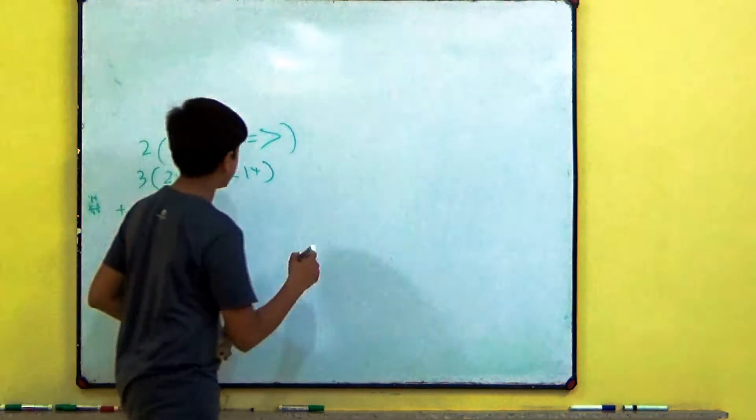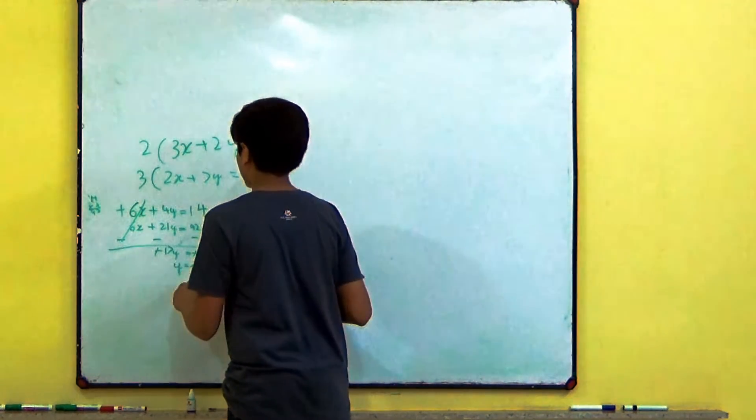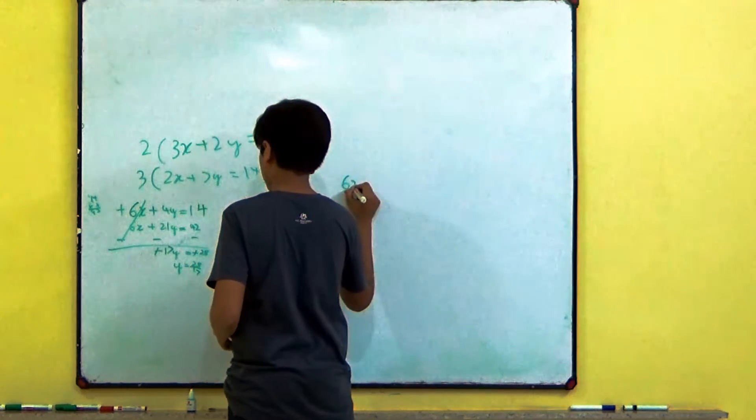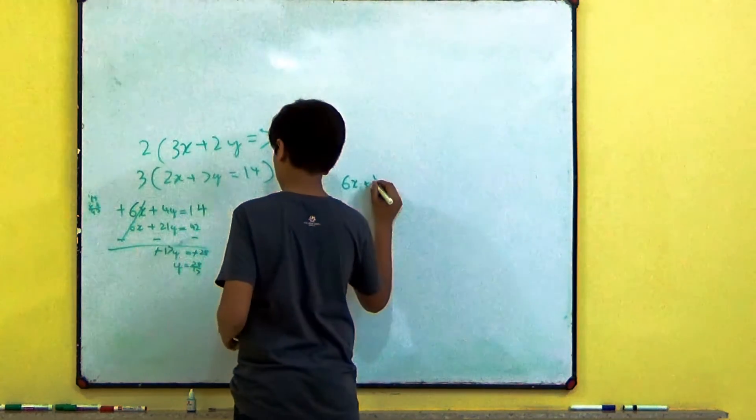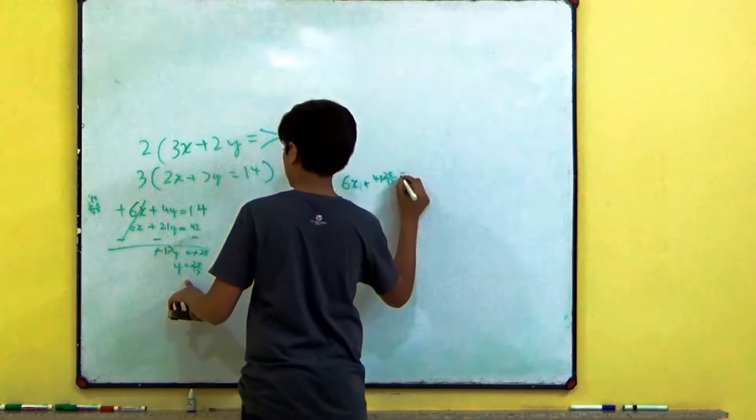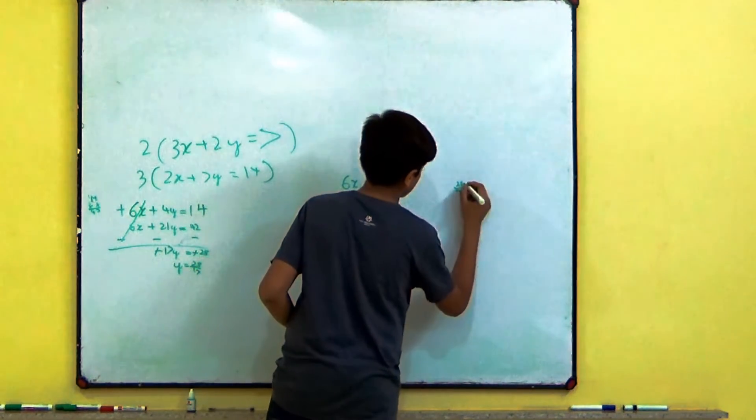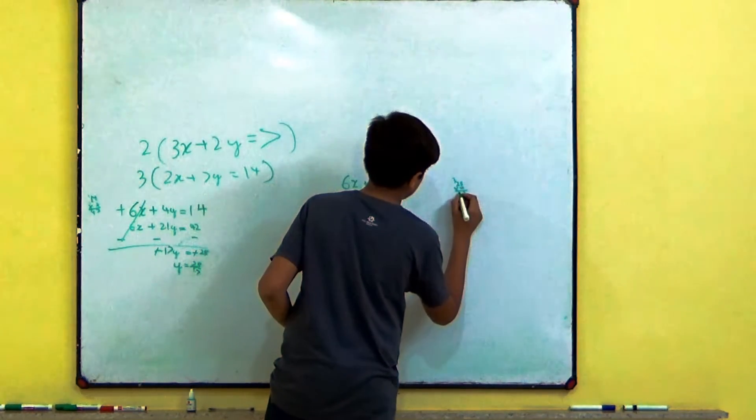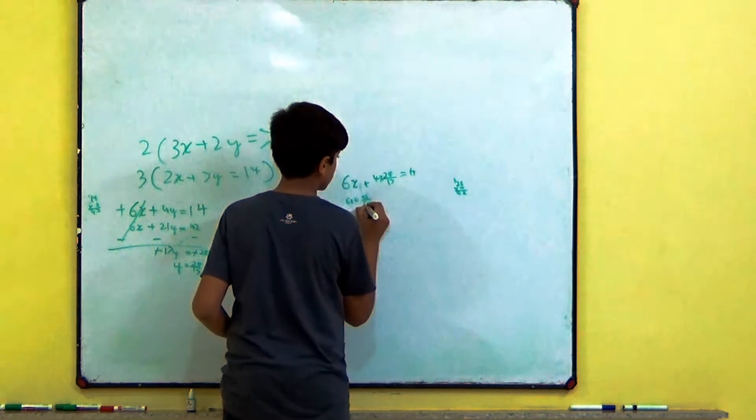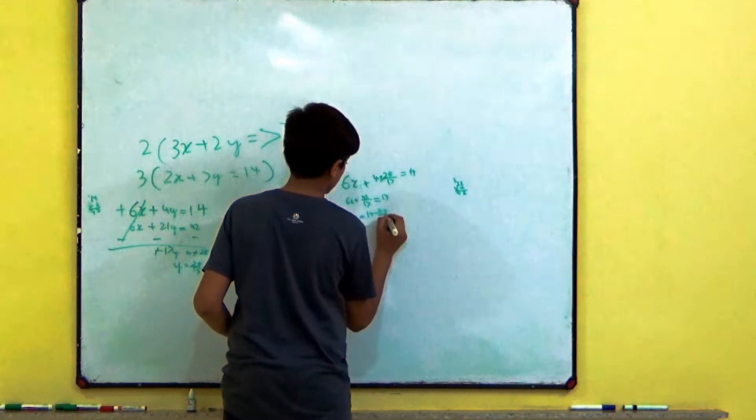So we got the value of Y is equal to 28 upon 17. If we put minus 28 upon 17 in this equation, then we will derive the value of X. So 6X plus 4, now we have the value of Y, so 28 upon 17 multiplied, and is equal to 14. So if we solve it, then 6X plus 92 upon 17 is equal to 14.